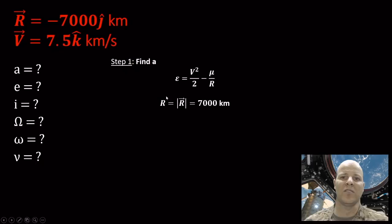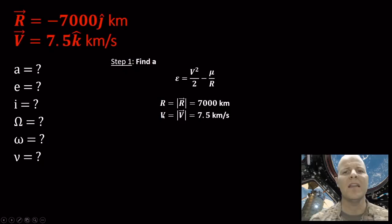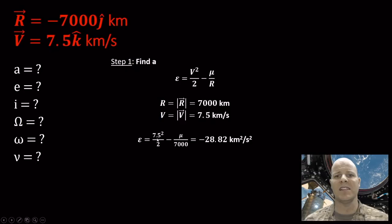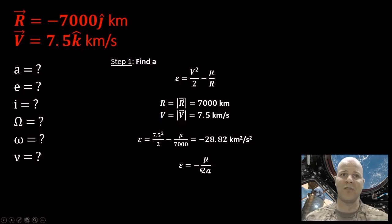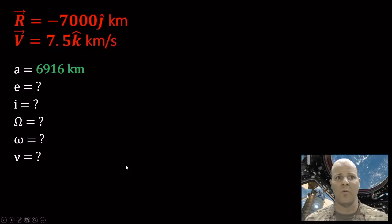Remember that when we write R without a vector symbol, we're asking for its magnitude. Since R only has one component here, it's simply 7000 km. The V vector magnitude is 7.5 km/s. Plugging those into the specific mechanical energy expression gives negative 28.82 km²/s². We can relate that to the other expression for specific mechanical energy: negative μ/(2a). Rearranging algebraically to solve for a, we find a = 6916 kilometers.